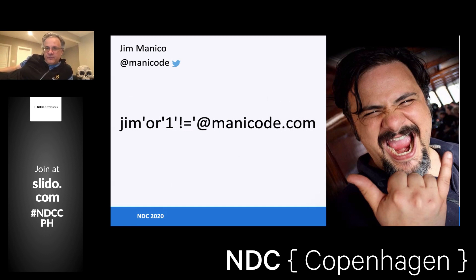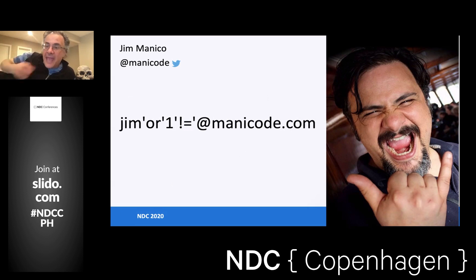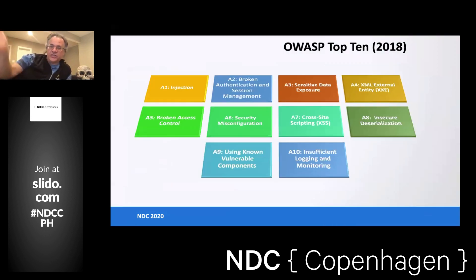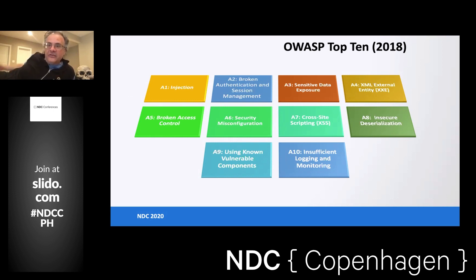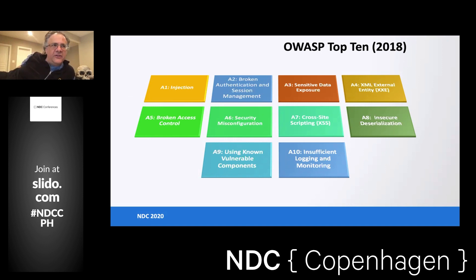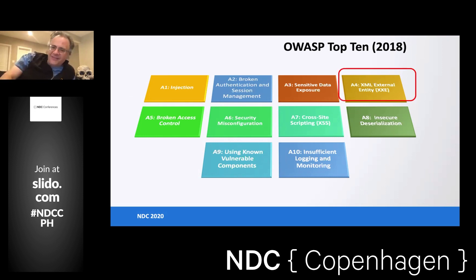Look at this email address. This is a valid email address that is going to be accepted by your validation layer. It's a legal email address you can email me at, but it's a SQL injection payload. So the point is even valid data can cause injection. Here's the OWASP top 10 — these are the top 10 security risks, a publication that OWASP pushes out every three years or so. It's a very famous list, and a lot of standards cite this top 10 list, including the payment card industry's data security standard.